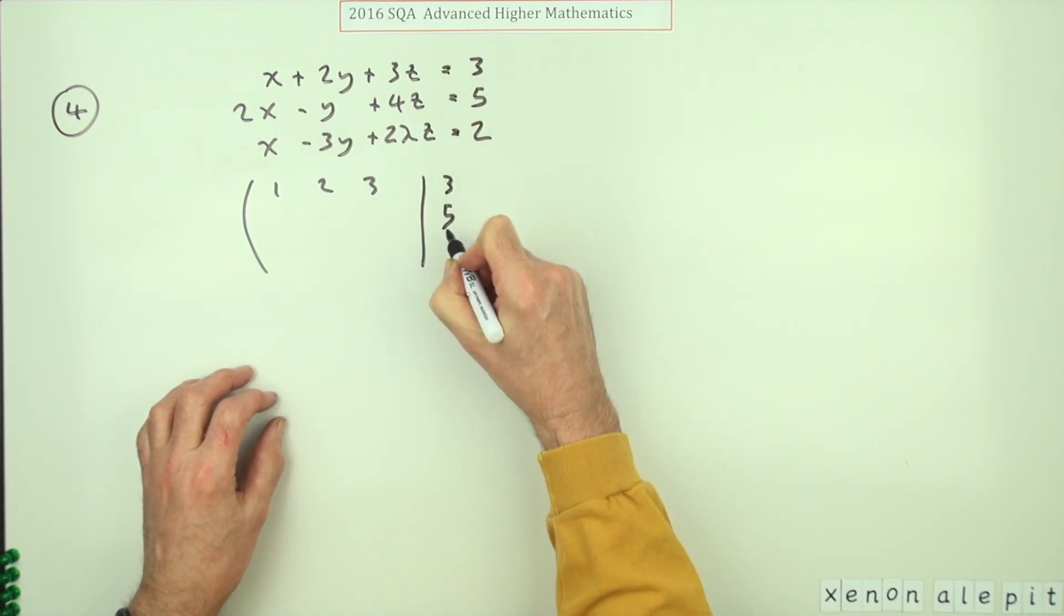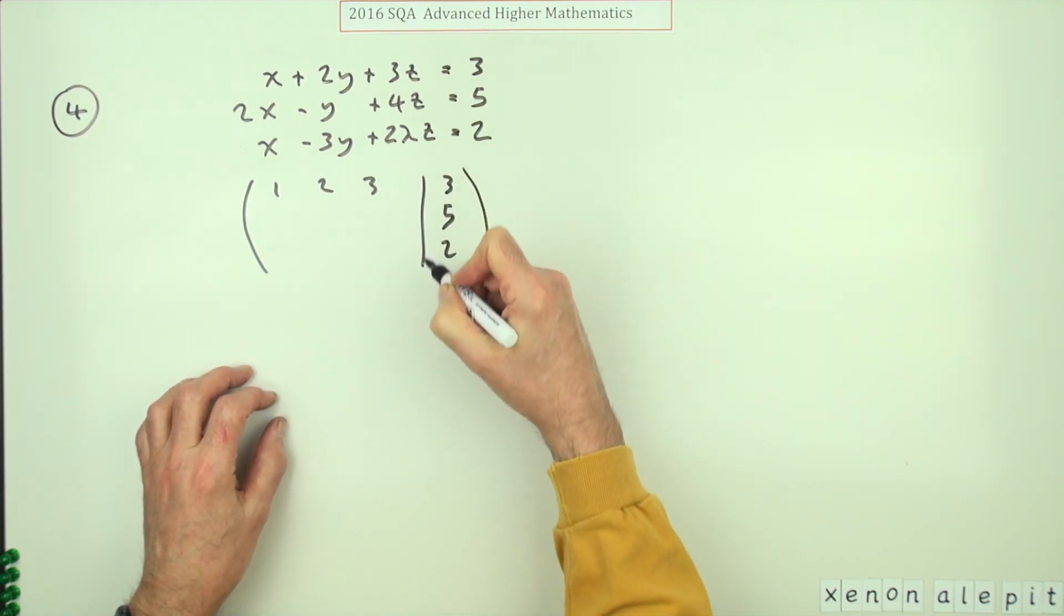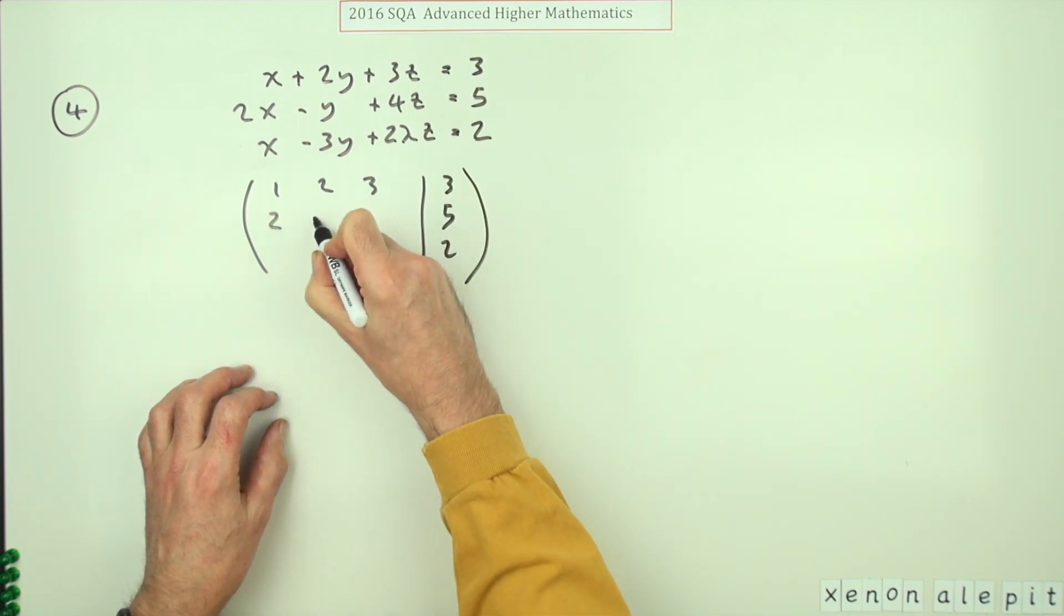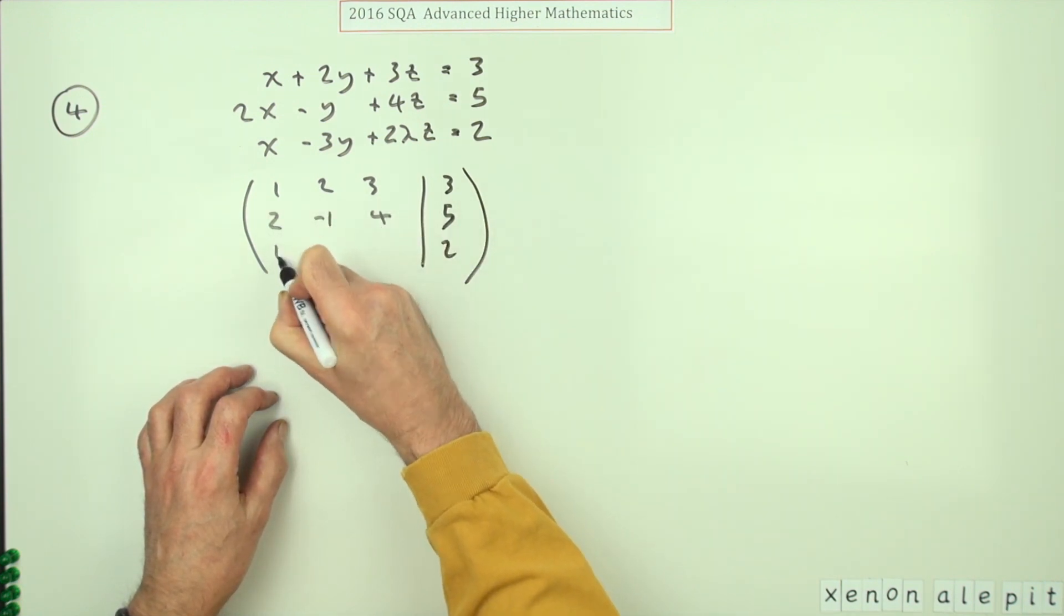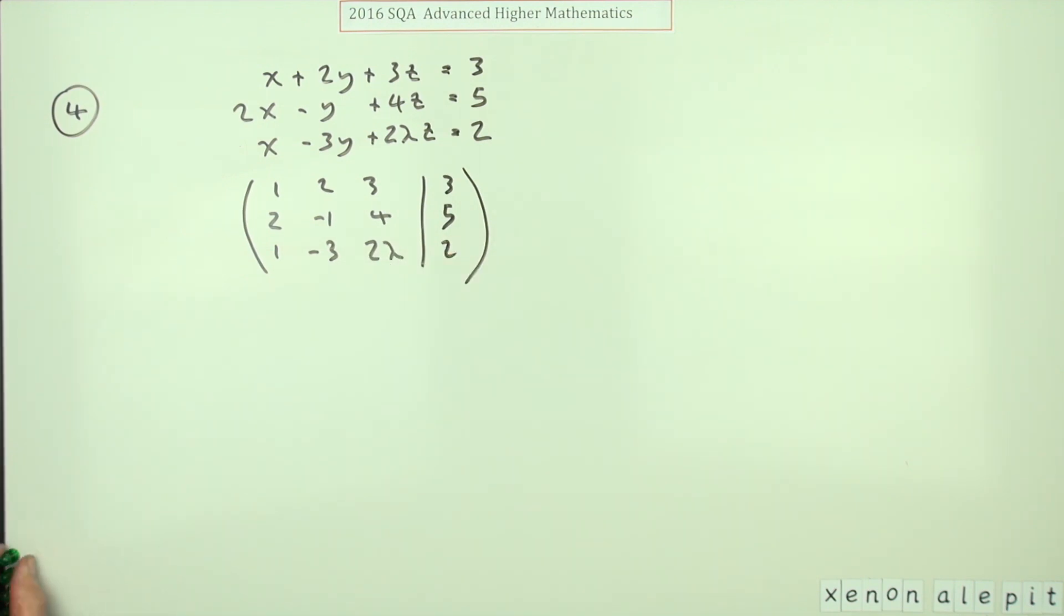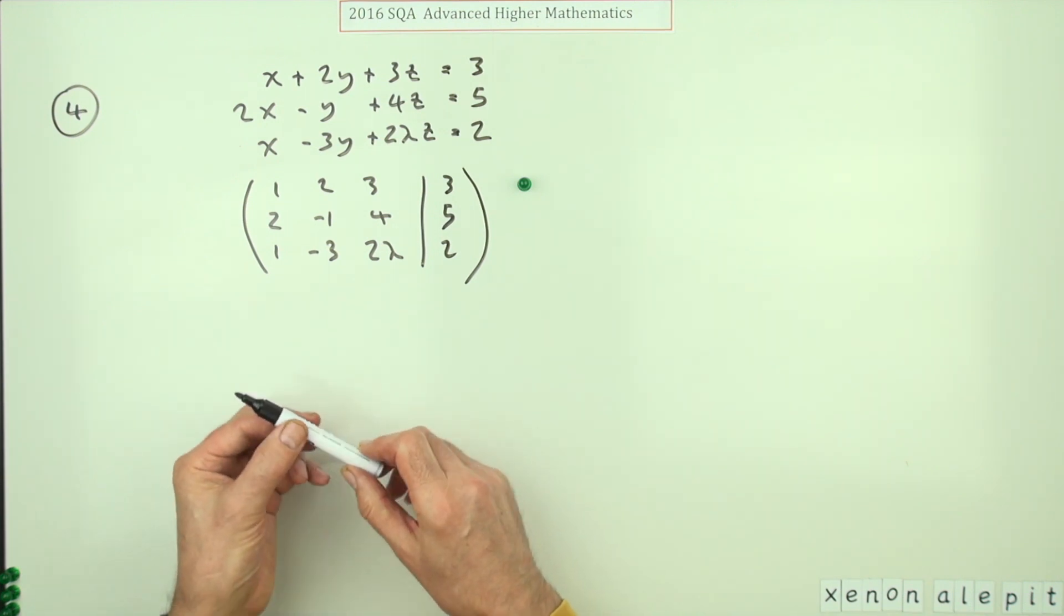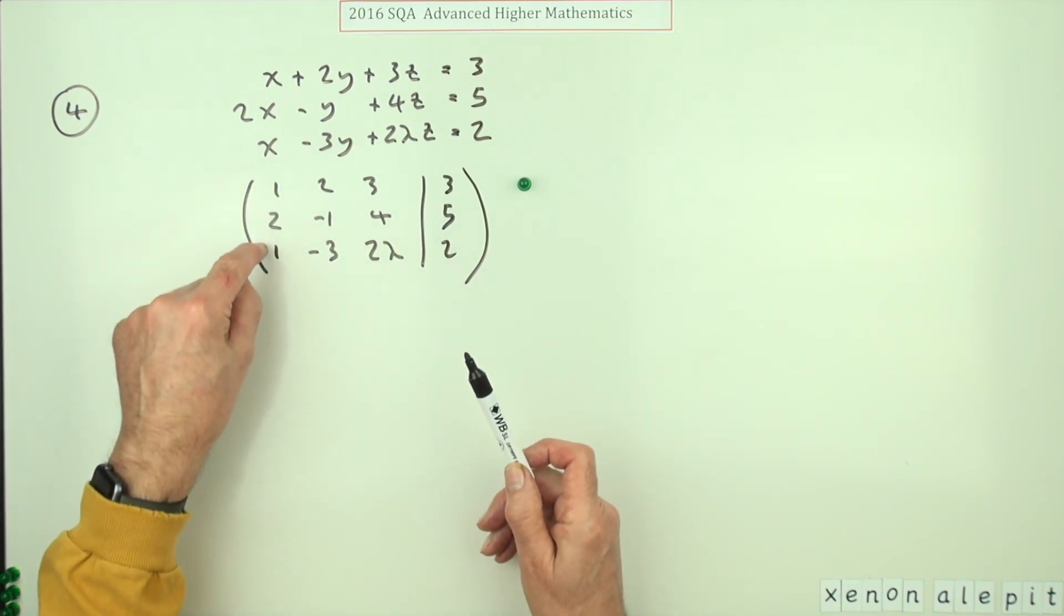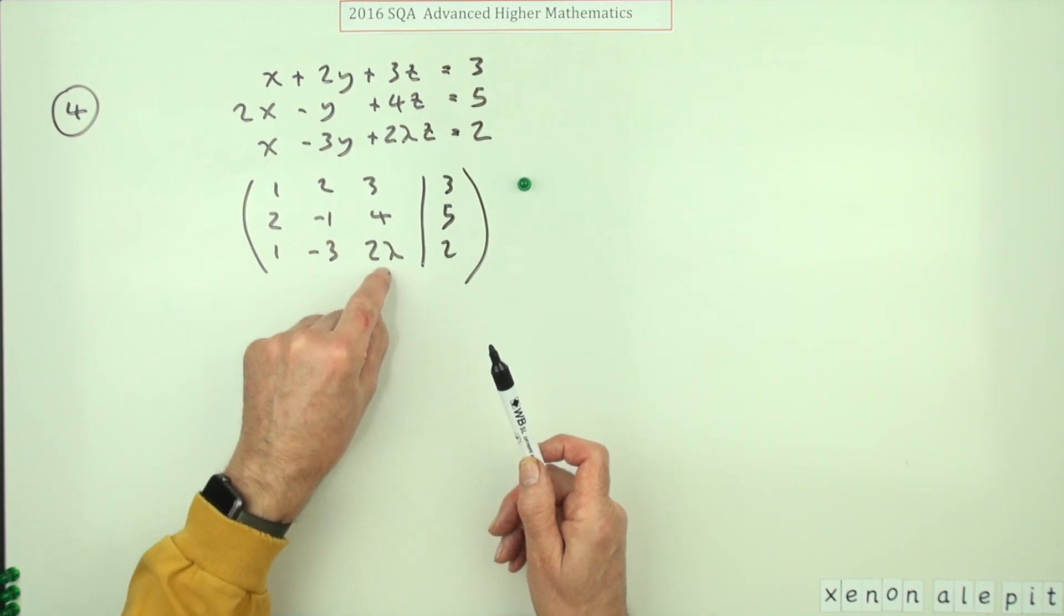One, two, three, just put a solid line—usually it's a dotted line, but it's very tedious and lengthy to do that. Two, negative one, four. One, negative three, two lambda. If you do that, you get a mark. Now the idea here is to get it into upper triangular form.